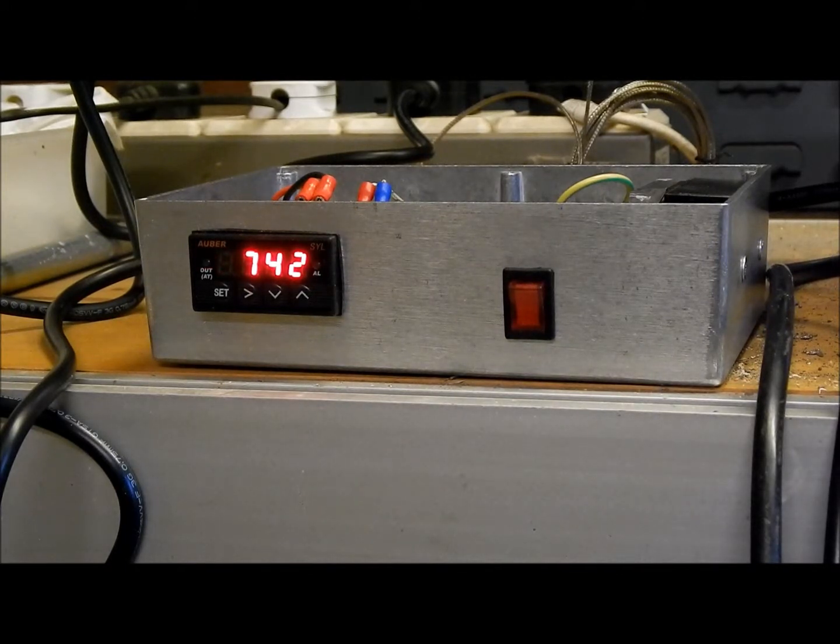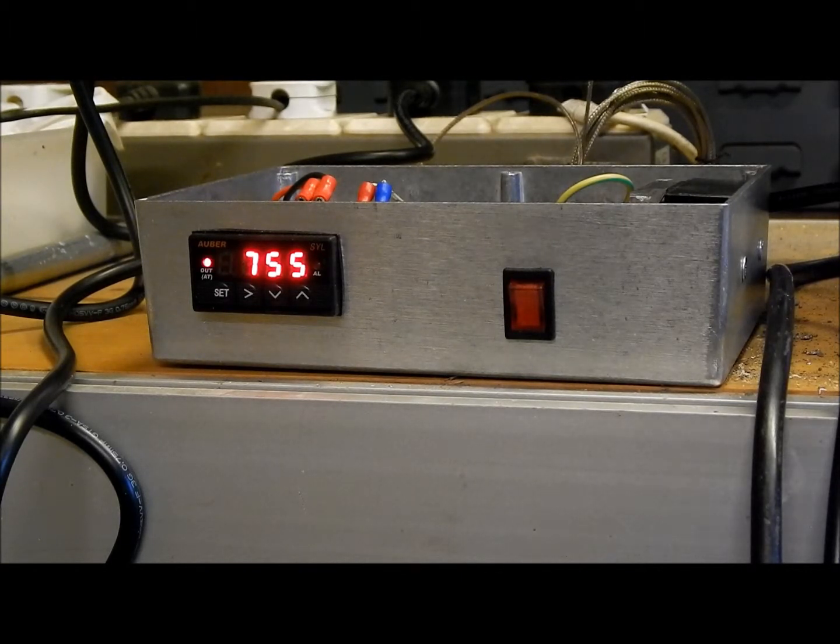It's starting to approach the set point which is set to 750 F. Because this is the first attempt at auto tuning I expect it's going to overshoot considerably because it doesn't turn off until it reaches the set point. Now it's reached 770 and the relay has now turned off so it will go into its cooling cycle.